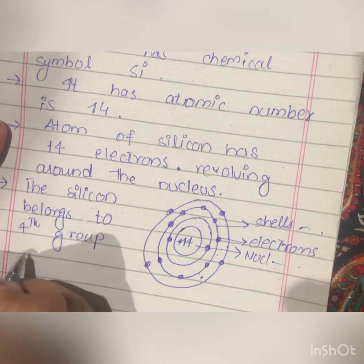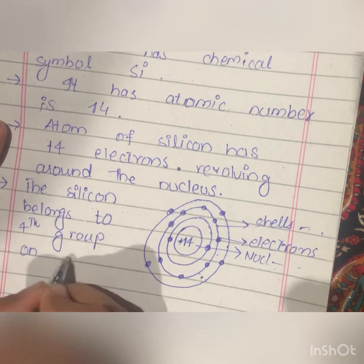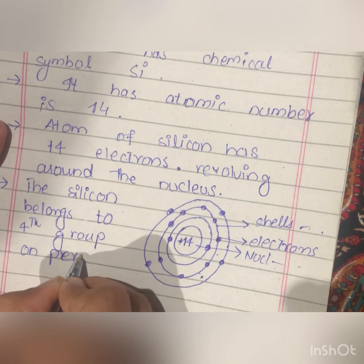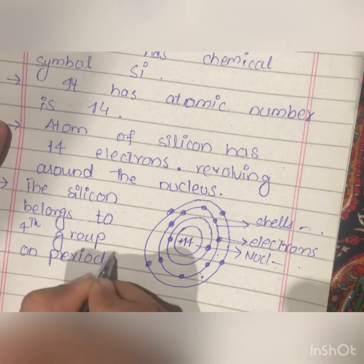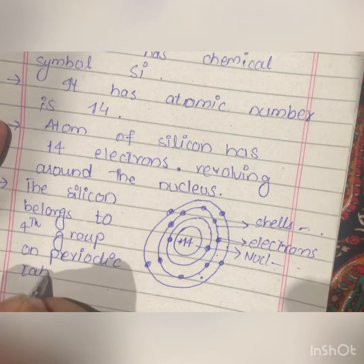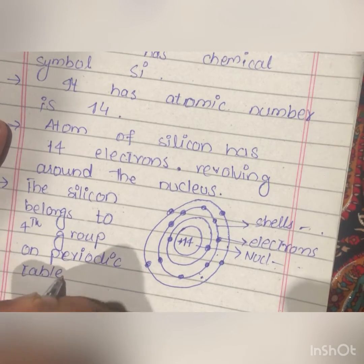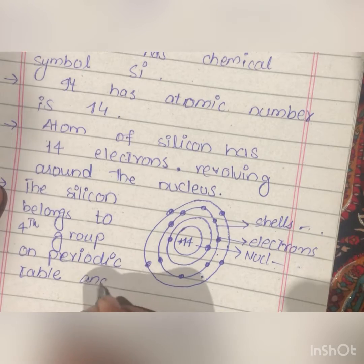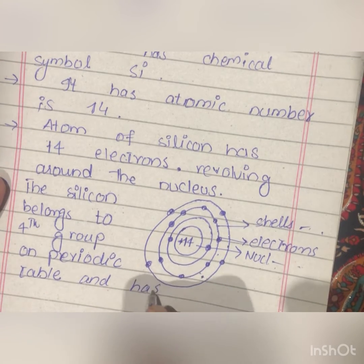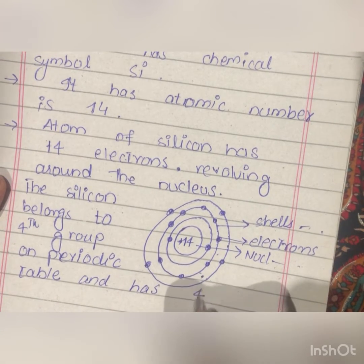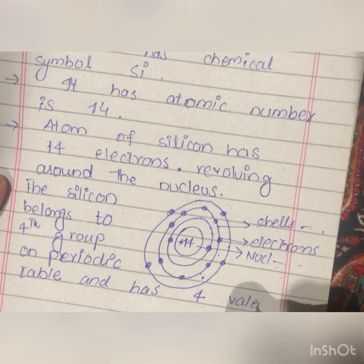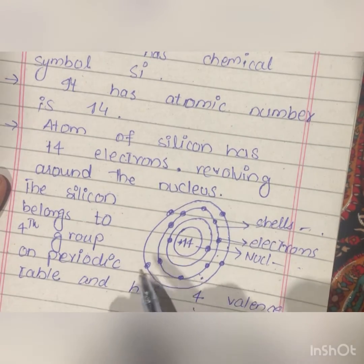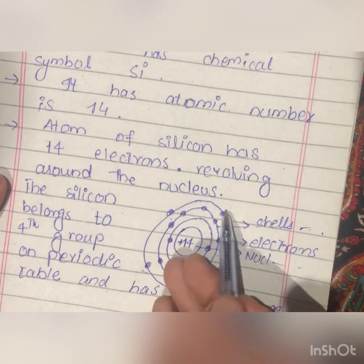Silicon belongs to the 4th group on the periodic table, and has 4 valence electrons in the outermost orbit — 1, 2, 3, 4.